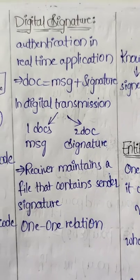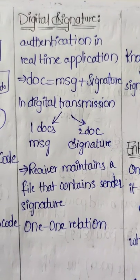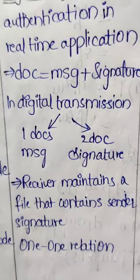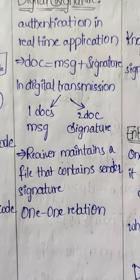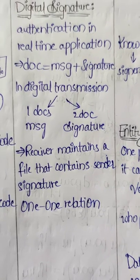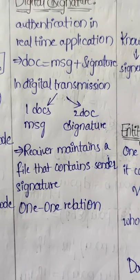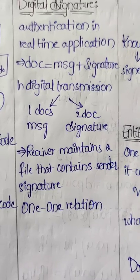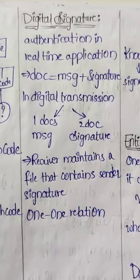Digital Signature comes under authentication in real time application. It is the signature on paper but in a more secured way. The document contains message and signature, but in digital transmission it has to be in two documents - one for message and the second for signature. Receiver should maintain a file that contains the sender's signature. The complete digital signature is one-to-one relation.